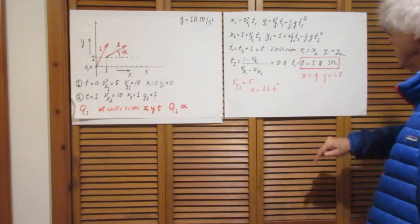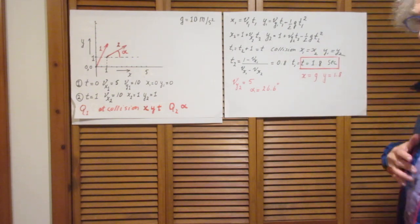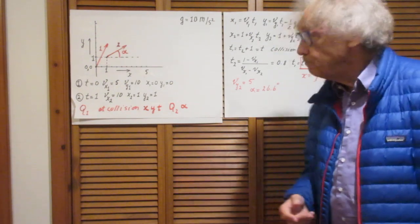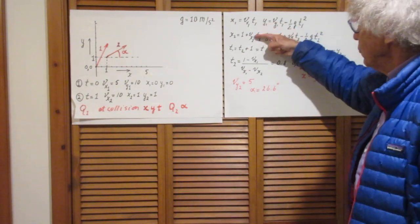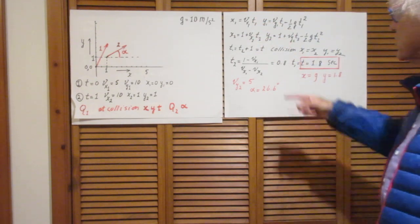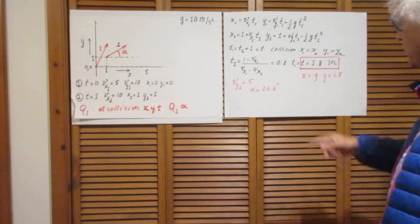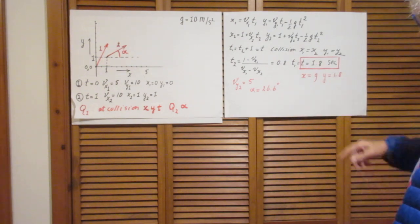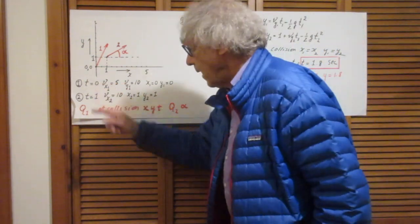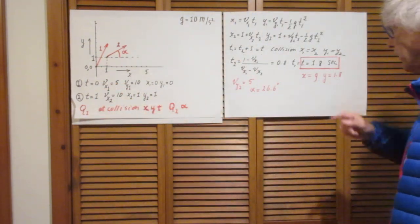Now at the collision x1 must be x2 and of course y1 must also be y2. If you put these equal to each other, you can immediately solve for t2. t2 is then 0.8 seconds and therefore t1, which we have called the time t1 is 1.8 seconds.